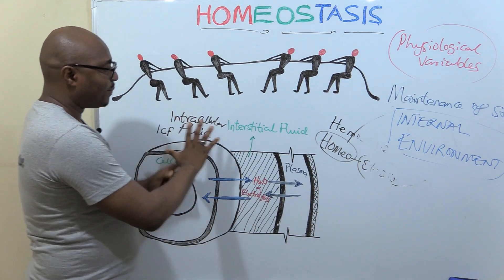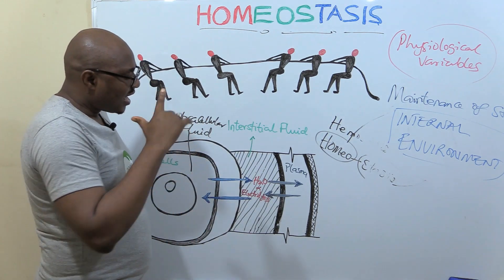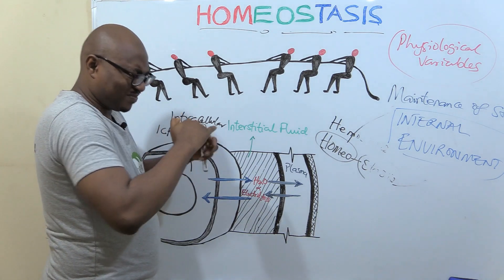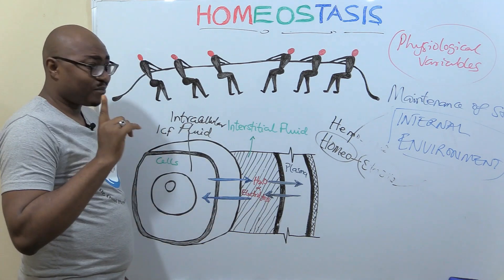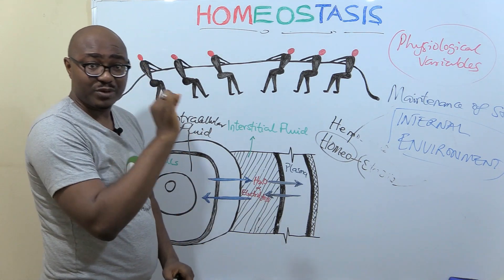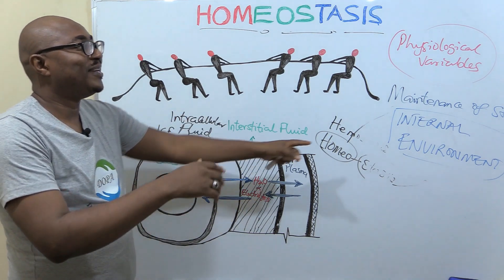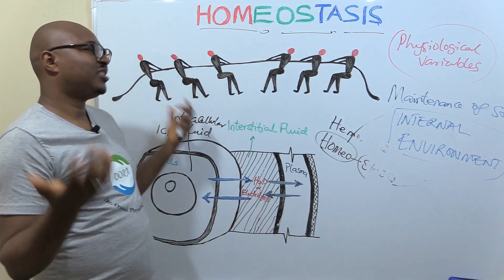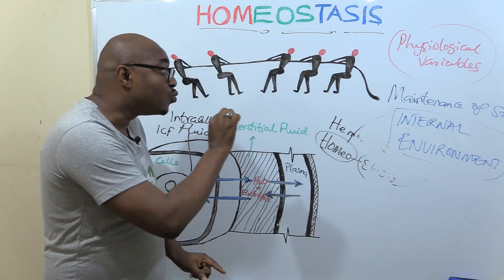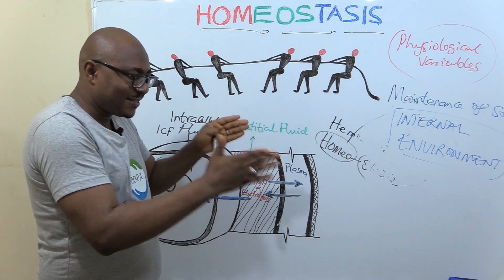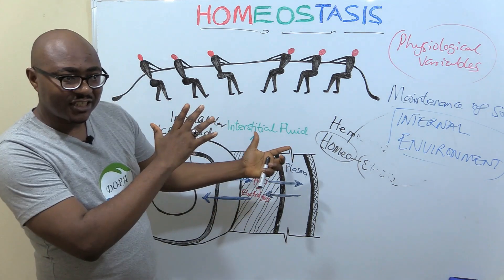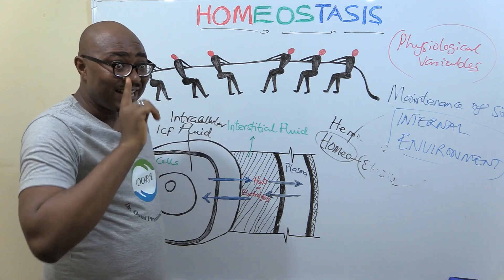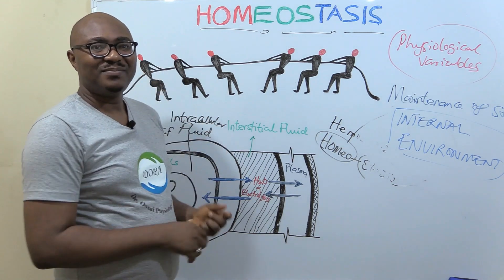So this is what happens. Now we are going to ask ourselves: why does the body want balance? It's very important to always ask yourself the purpose — if not, you will just cram definitions that may not make sense. Maintenance of stability — why do we want stability that should not change too much either up or too much down? We are going to learn that.